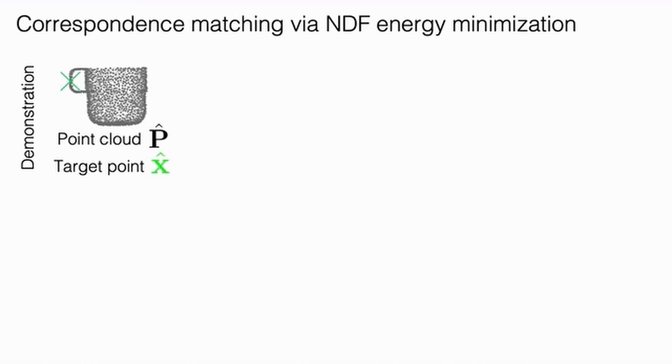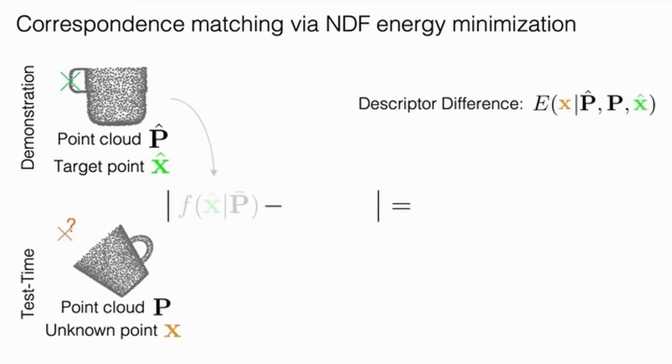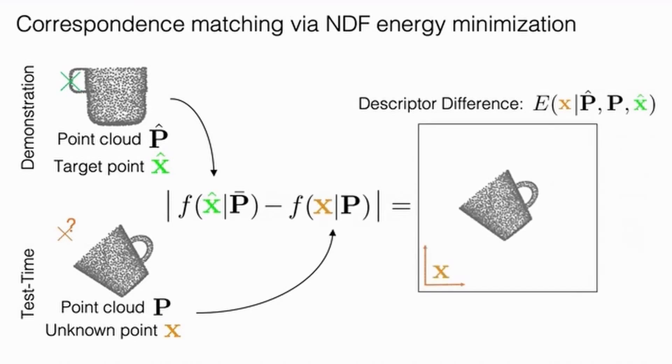The technique uses a neural network specifically designed to reconstruct the shapes of 3D objects. With just a few demonstrations, the system uses what the neural network has learned about 3D geometry to grasp new objects that are similar to those in the demos.